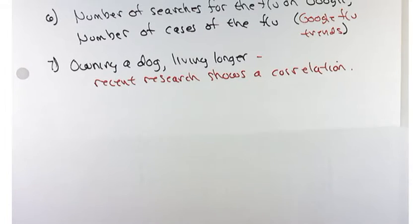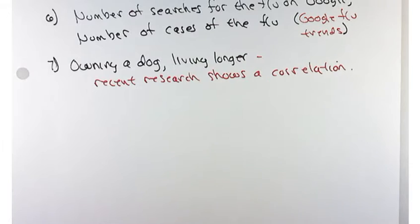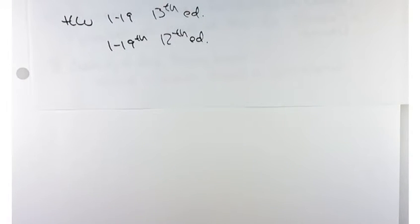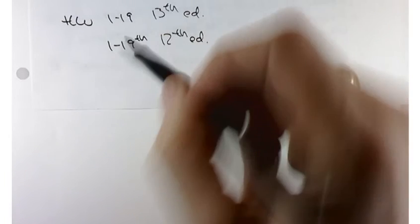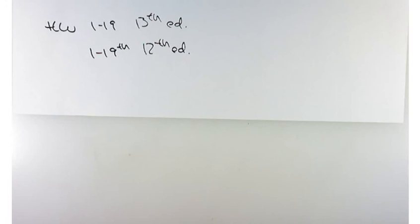For homework in both the 13th and 12th editions, try problems 1 through 19. The 12th edition has a cool problem 19 about the correlation between light received from a galaxy and how far away it is — giving researchers a way to measure distances to galaxies.